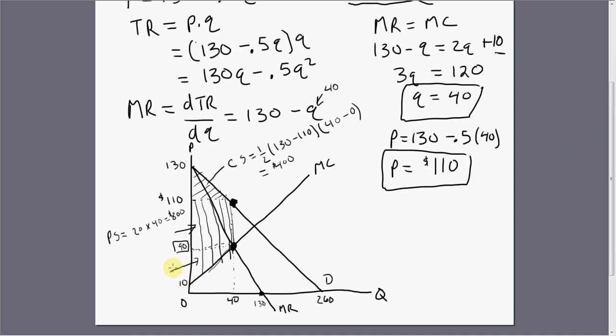So producer surplus in this area is one-half base times height, so 80 times 40. So this is going to be 1,600. So total producer surplus is 800 plus 1,600, or 2,400.